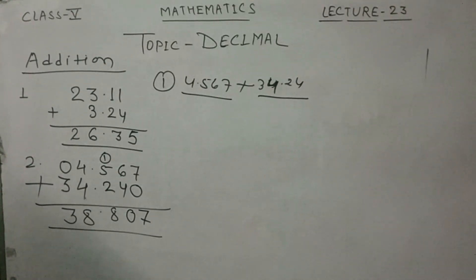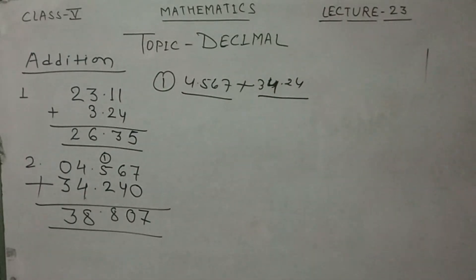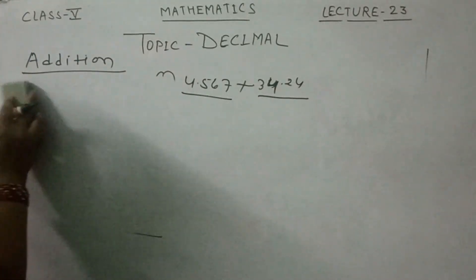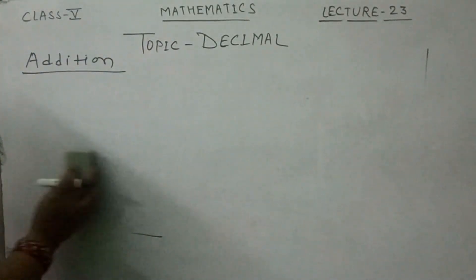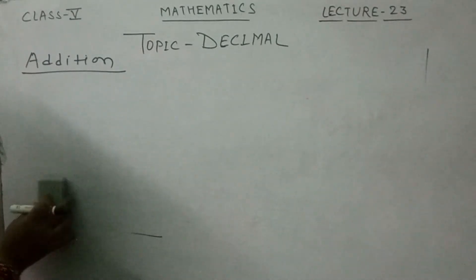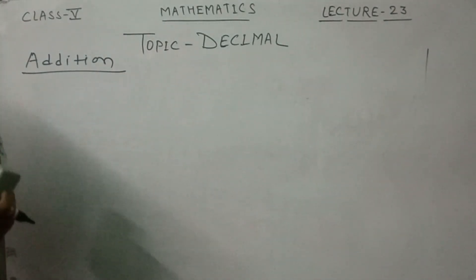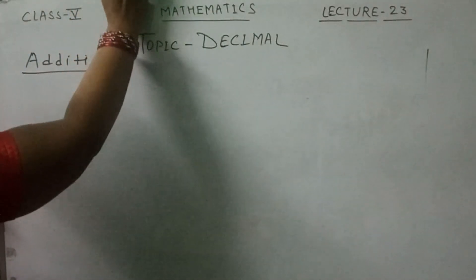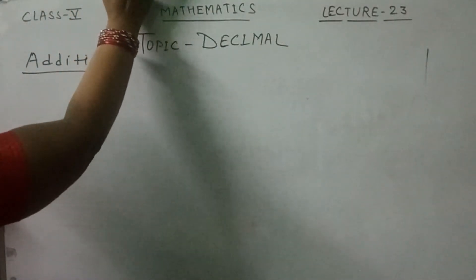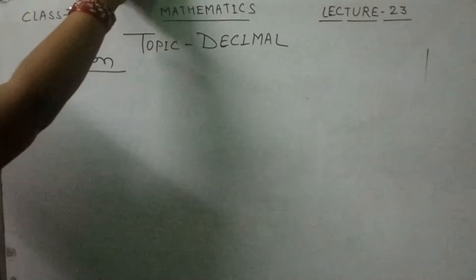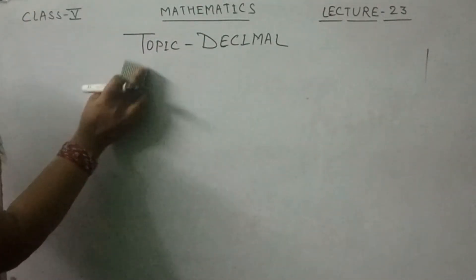So the rule of addition is: first write the numbers one under the other with decimal points aligned. Then put zeros so the numbers are the same length. After that, do simple column addition and put the decimal point in the answer. The same steps apply for subtraction.